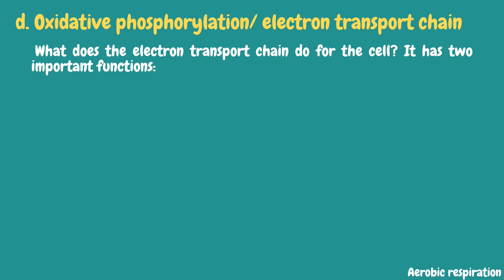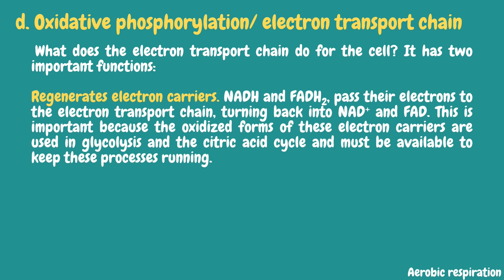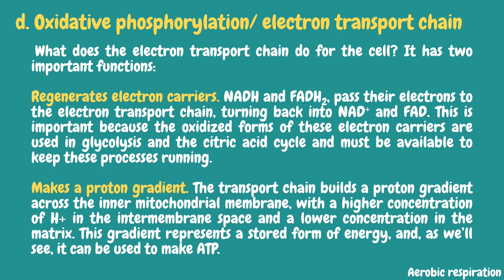The last stage of cellular respiration is oxidative phosphorylation, or the electron transport chain. It has two important functions. First, it regenerates electron carriers: NADH and FADH2 pass their electrons to the electron transport chain, turning back into NAD+ and FAD. This is important because the oxidized forms are used in glycolysis and the citric acid cycle. Second, it makes a proton gradient. The transport chain builds a proton gradient across the inner mitochondrial membrane, with a higher concentration of hydrogen ions in the intermembrane space and a lower concentration in the matrix. This gradient represents a stored form of energy that can be used to make ATP.